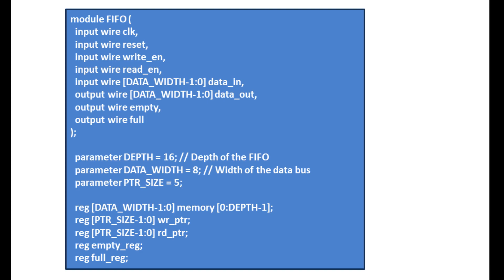Another parameter is PTR size which equals 5, used to indicate the pointer size. We also have a memory — a register array that represents the storage for the FIFO elements. The depth of this memory is 0 up to depth minus 1, which is 16, and the width is data width minus 1 down to 0, which is 8. So this register array can store 16 elements, each 8 bits wide. We also have write PTR and read PTR registers that keep track of write and read positions, and empty reg and full reg that track the empty and full status of the FIFO.